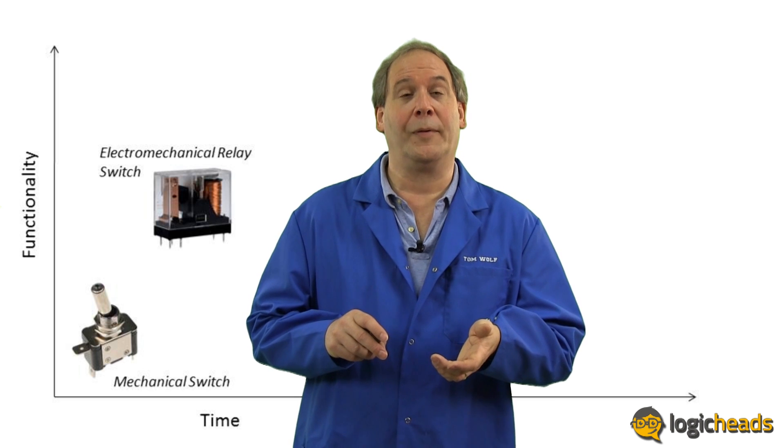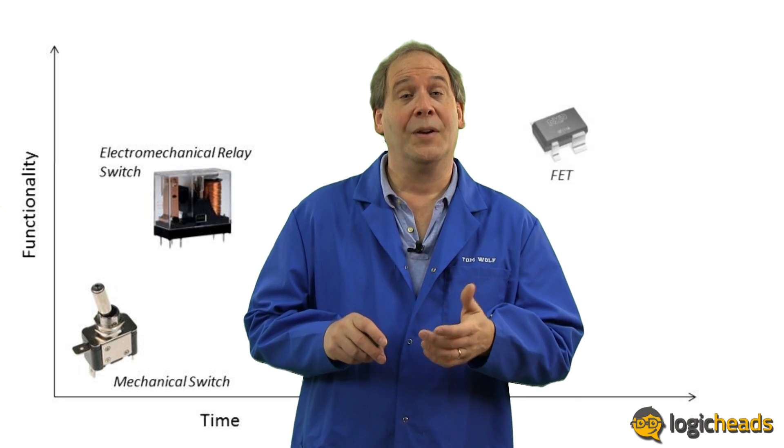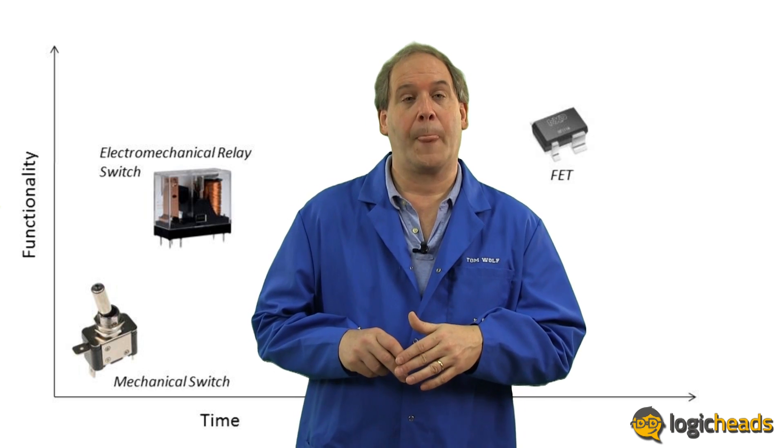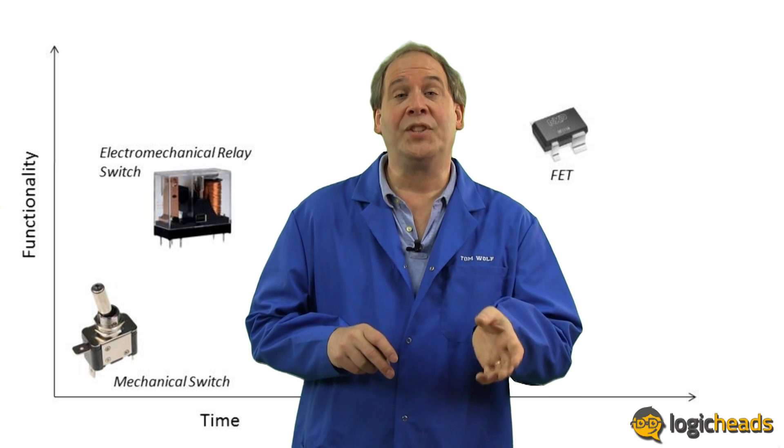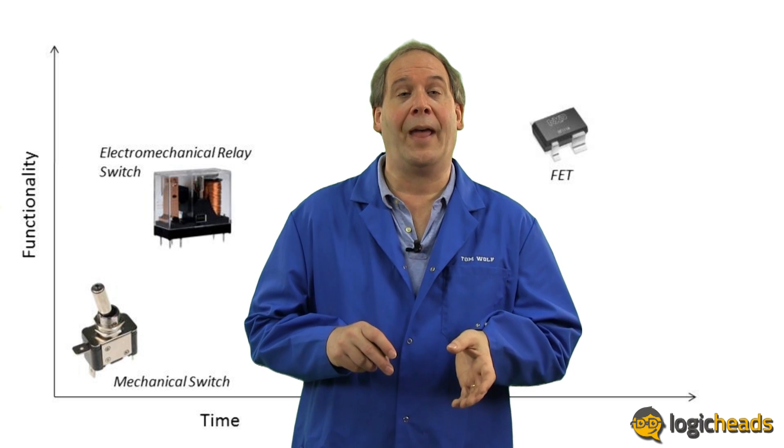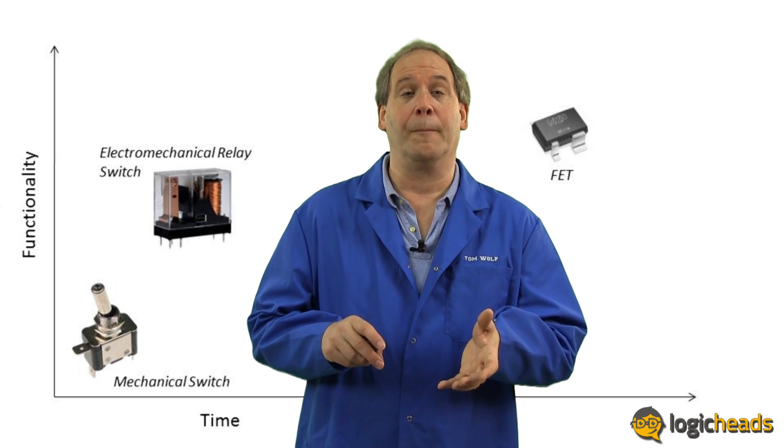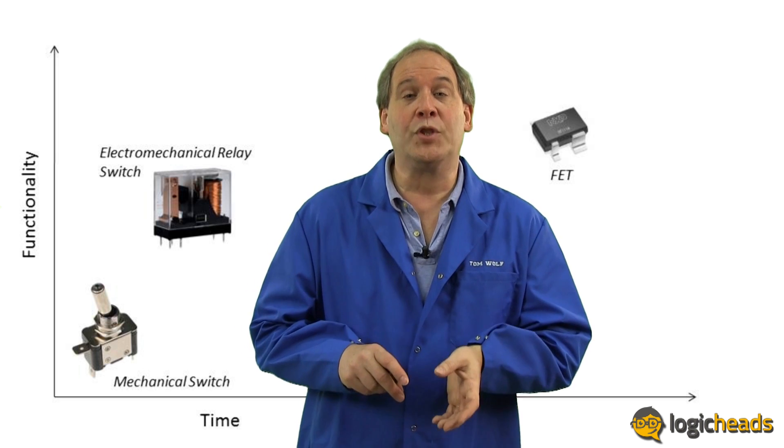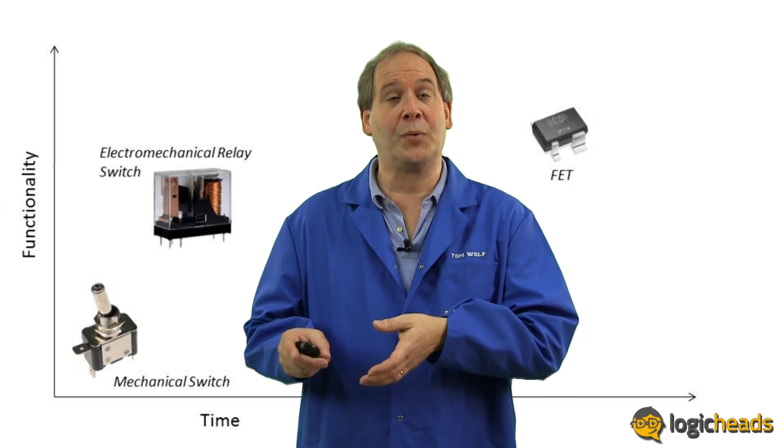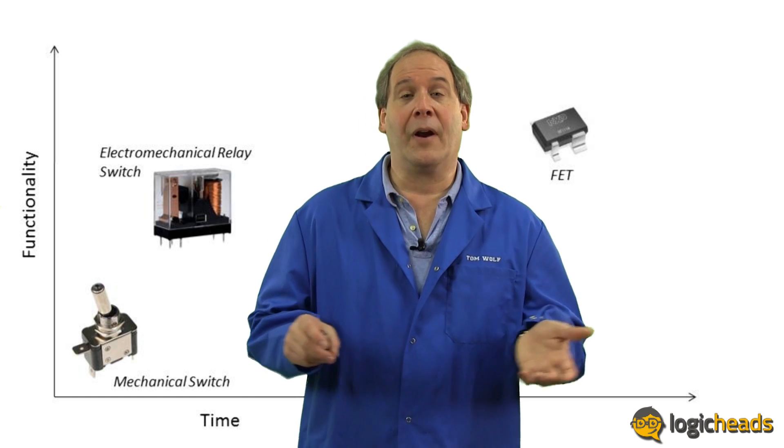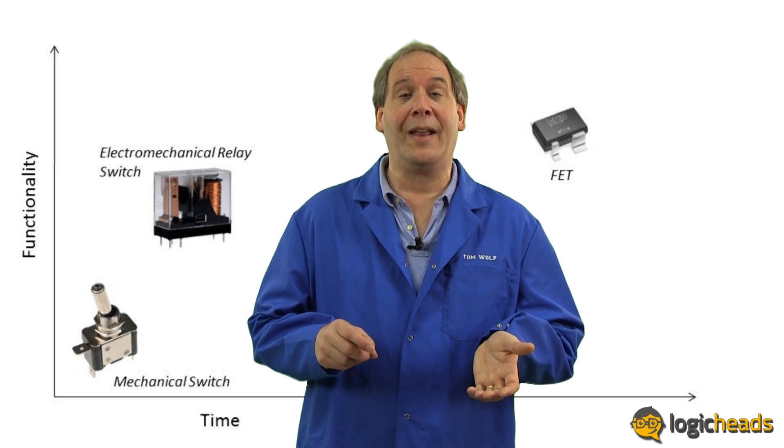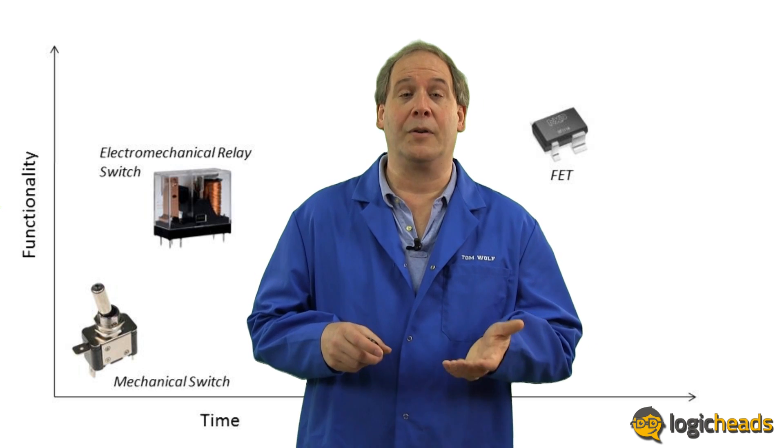So a semiconductor equivalent was invented, the FET or field-effect transistor. A FET essentially duplicates the electrical contacts inside a mechanical switch or relay with semiconductor material. Apply the right voltage to the gate and the current flows between the source and the drain. FETs can be made very small and since they have no moving contacts inside, they can be made very durable.